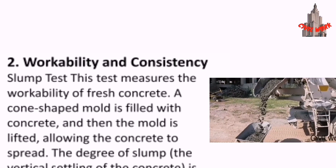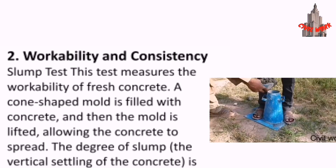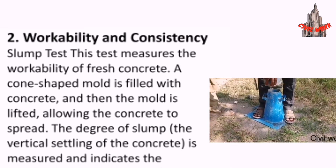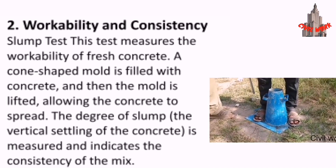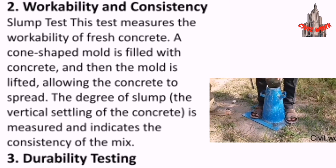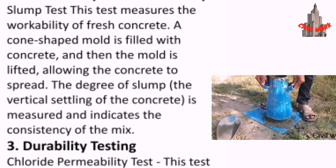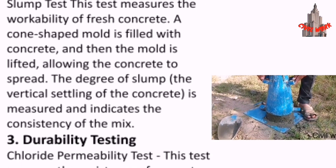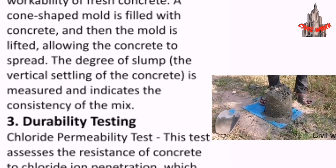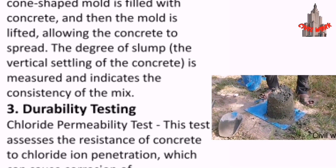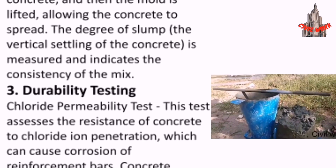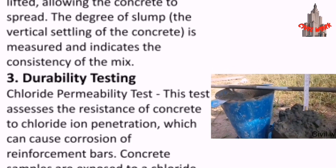Workability and Consistency — Slump Test: This test measures the workability of fresh concrete. A cone-shaped mold is filled with concrete and then the mold is lifted, allowing the concrete to spread. The degree of slump, the vertical settling of the concrete, is measured and indicates the consistency of the mix.